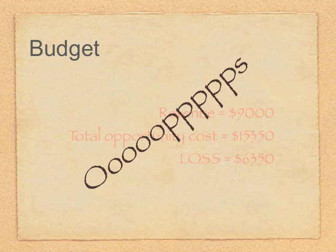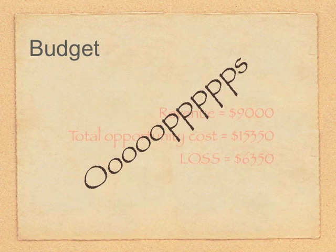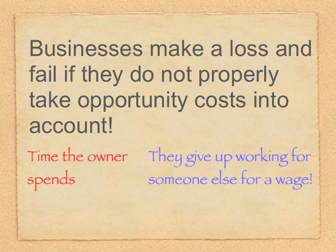This example, where a project is profitable on the basis of accounting costs but is unprofitable when all opportunity costs are taken into account, is a common one faced by business. Many businesses make losses and fail because they do not properly take opportunity costs into account. For example, businesses sometimes treat the time of their staff members as if it were a free resource — it isn't. Having a staff member work on one project takes them away from other potentially more valuable activities. For a small business, the person who owns and runs the business may fail to take into account the opportunity cost of his or her own time.